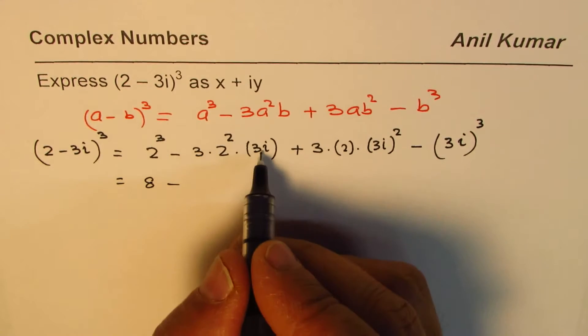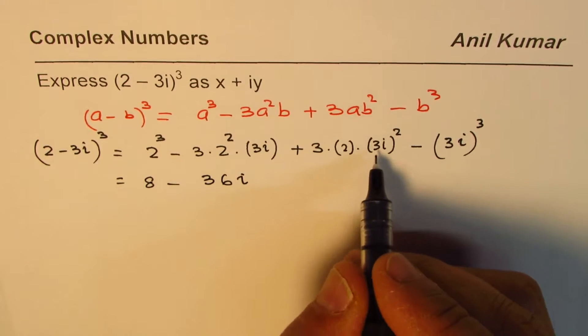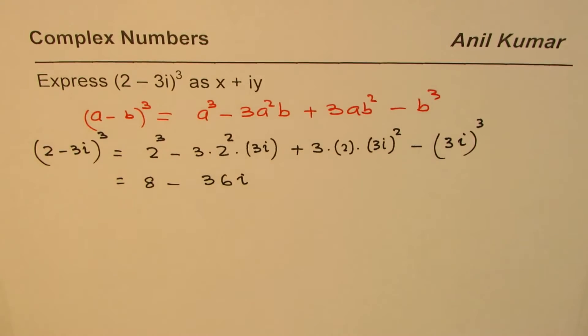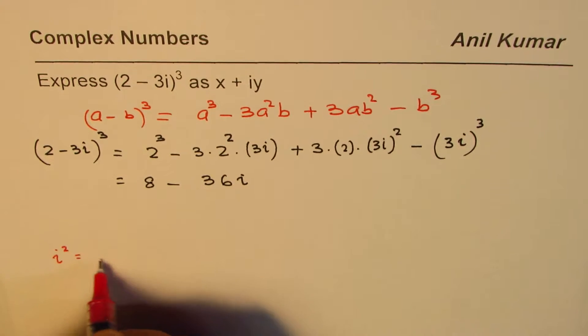i² is minus 1. Let me rewrite here: we know that i² is -1, i⁴ is 1. We have i³, so what is i³? i³ is -1 times i which is -i.